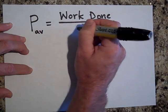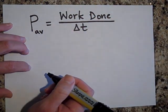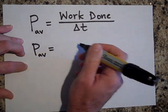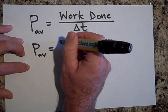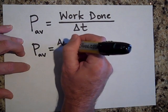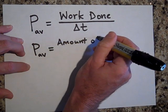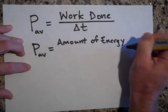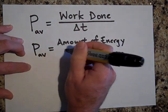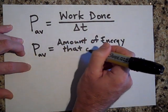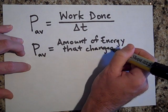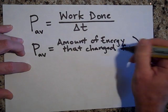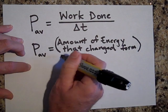So average power would be work done divided by delta t. It's also the rate at which energy changes forms, so it's the amount of energy that changed forms divided by the time it took to change those forms.